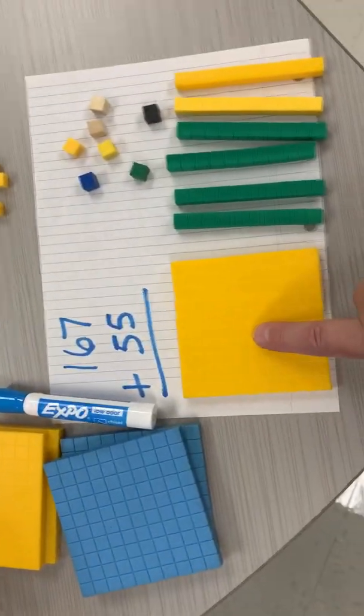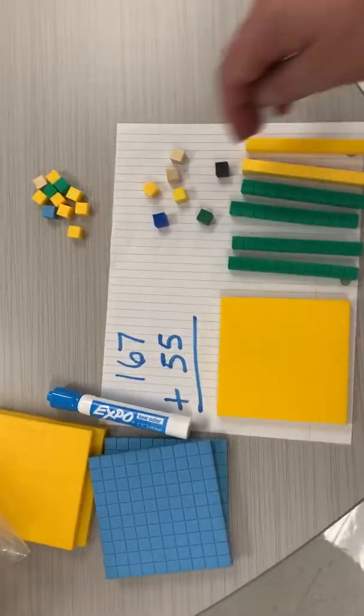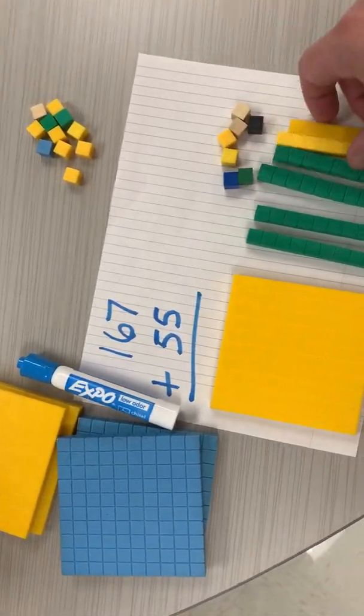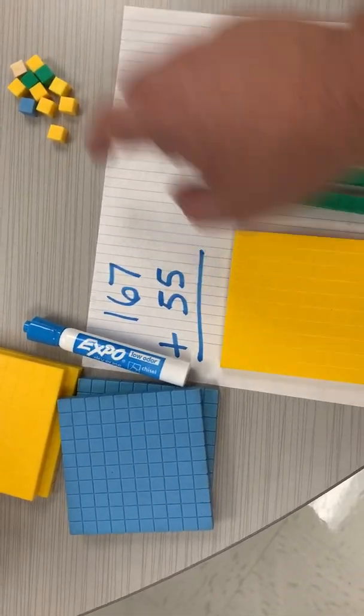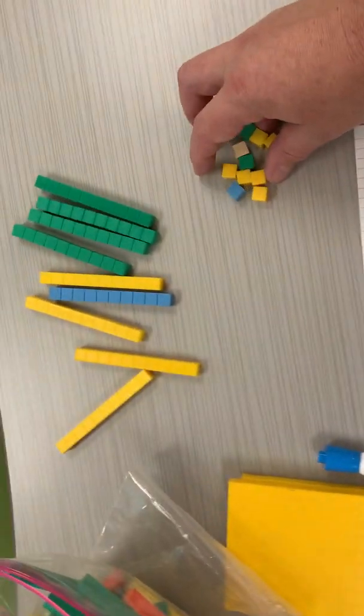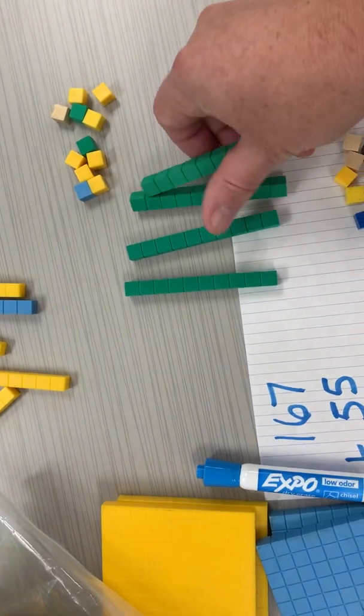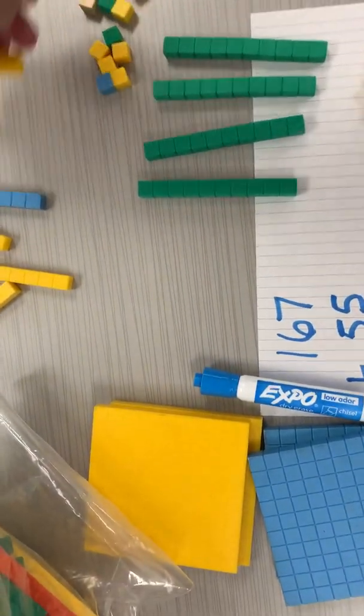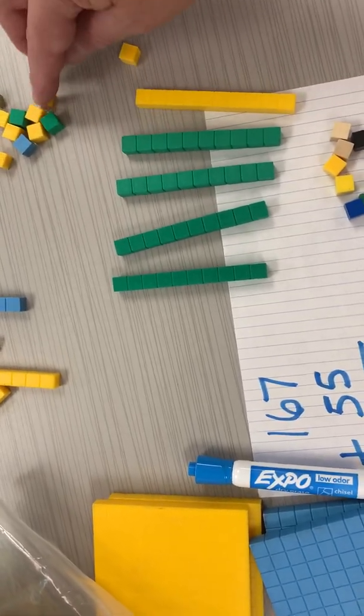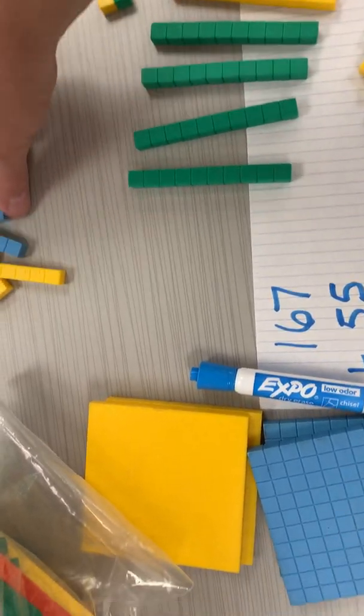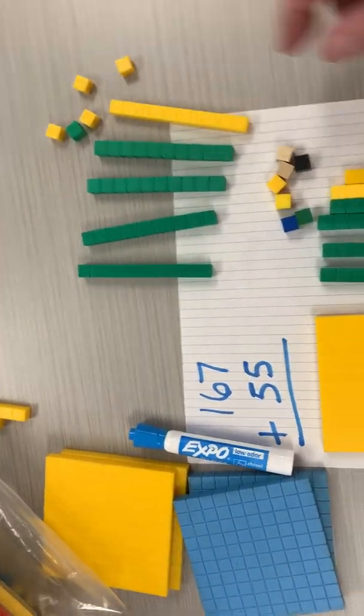Okay, now what I'm gonna do is I'm gonna add that to 55. You can see my 55 over here. So now I have to go over to my supplies and I have to get 50. So 10, 20, 30, 40, 50. And then I need to get five of these, so 1, 2, 3, 4, 5. And I'll move these other ones aside, so now I have 55. There's 50 and my 5.